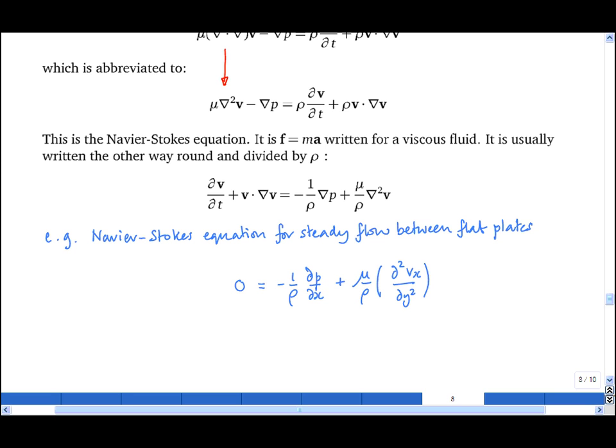In the y direction, one simply obtains 0 equals minus 1 upon rho dp by dy plus 0, because vy is 0. This expression simply tells us that there is no pressure gradient in the y direction, while the top expression gives us the required relationship between dp by dx and d2 vx by dy squared.